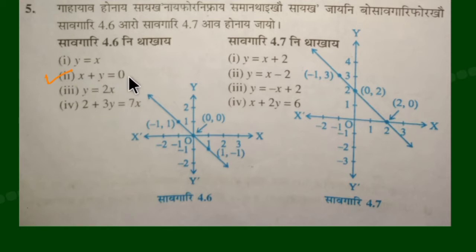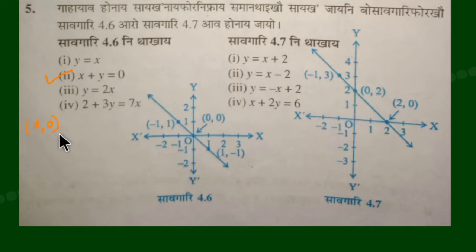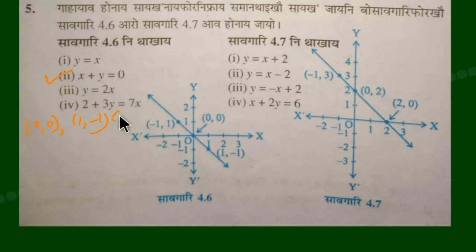This is a graph that has a graph. If you want the graph, the graph is given. If you want the graph, it is zero zero. 1 is minus 1.